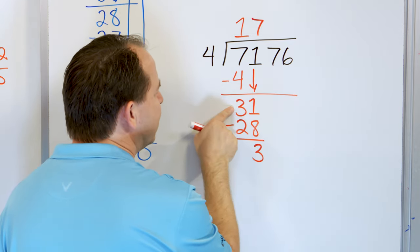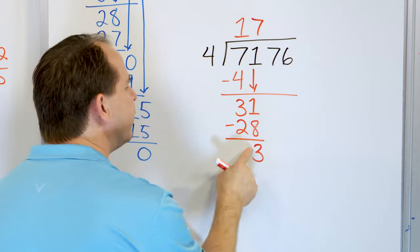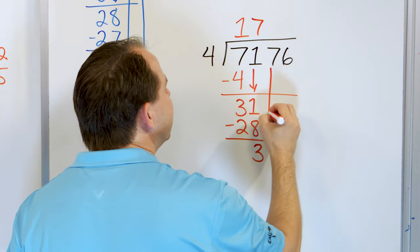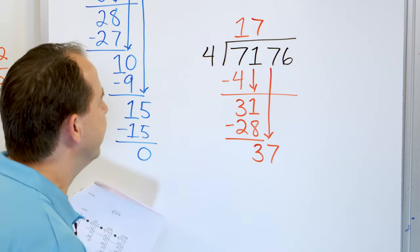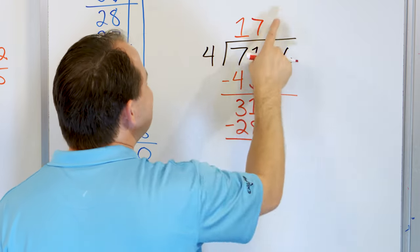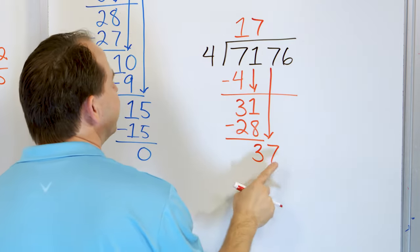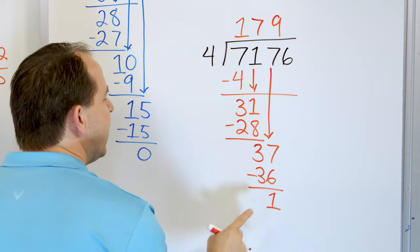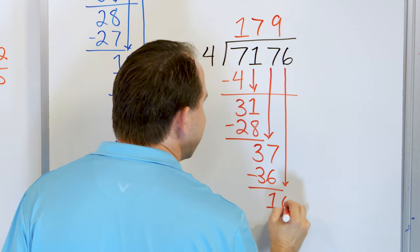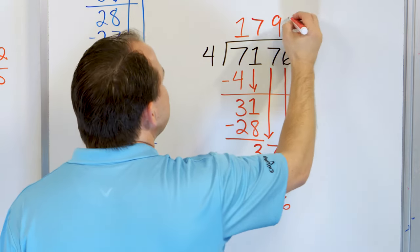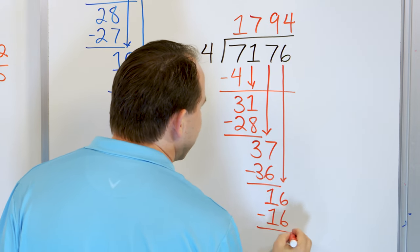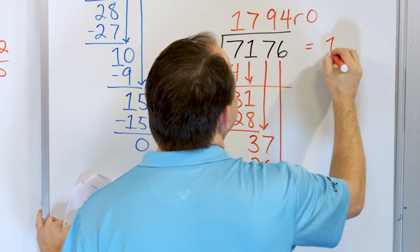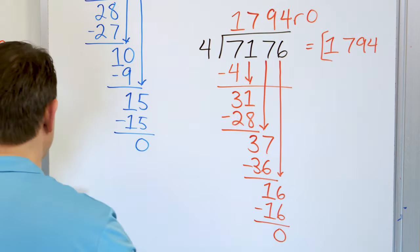We've subtracted and got a 3. Next, grab the digit 7, now you have 37. 4 times 9 is 36, 4 times 10 is 40 — too big. So 4 times 9 is 36, subtract. 37 minus 36 is 1. After you subtract, grab the next number, which is a 6. Now you have a 16. 4 times 4 is 16, subtract and get a 0. Grab the next digit — there is no next digit — so the remainder is 0.